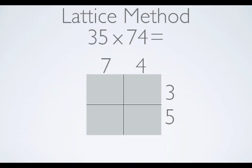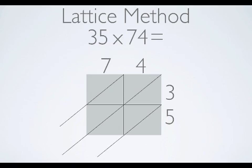Once we have a column for each place value of the top number and a row for each place value of the side number, we need to divide each of our new spaces diagonally. You extend the diagonals out of the box.